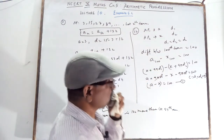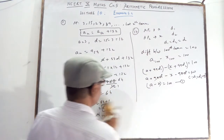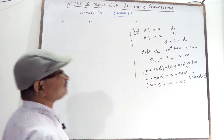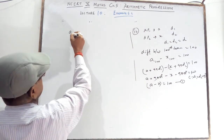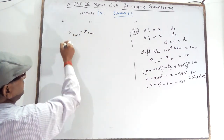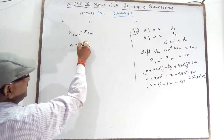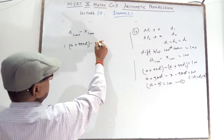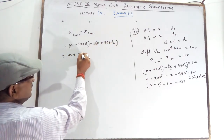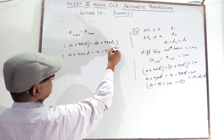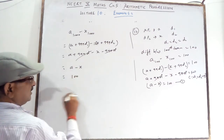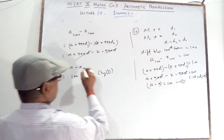Now find A1000 minus X1000. That is A plus 999D1 minus (X plus 999D2). Since D1 equals D2 equals D, the 999D terms cancel, and you get A minus X, which equals 100 from equation 1.